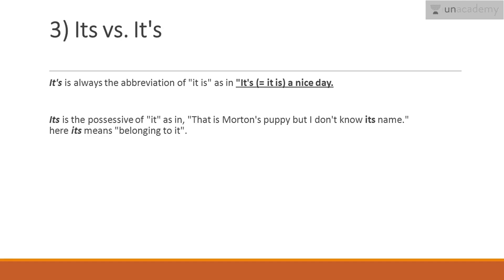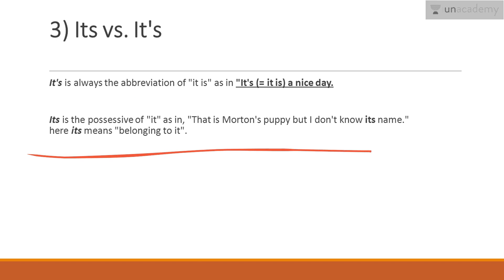The third one is 'its' vs. 'it's.' This one tends to confuse even the best of writers. 'It's' with an apostrophe is a contraction of 'it is' — for example, 'it's a nice day' means 'it is a nice day.' The second form, 'its' without an apostrophe, is possessive — for example, when talking about a puppy: 'I don't know its name.' So wherever there is a sense of belongingness, you use 'its' without an apostrophe.